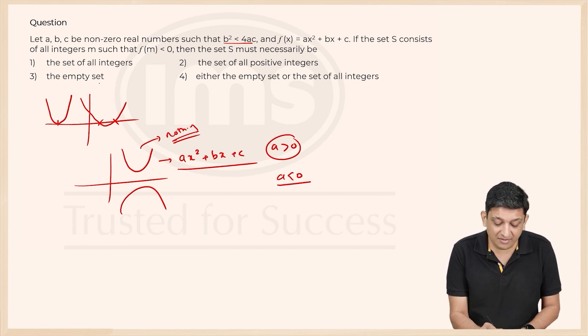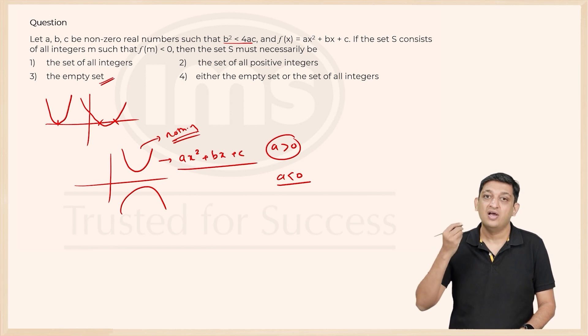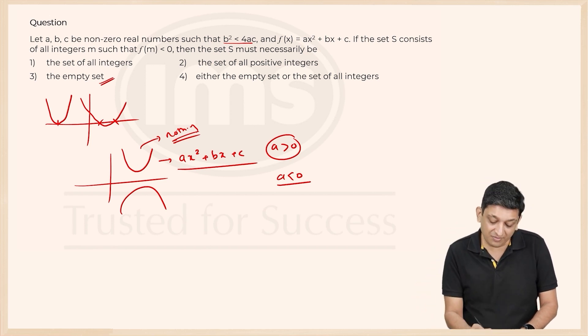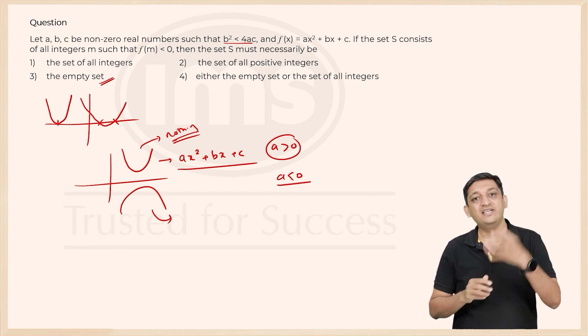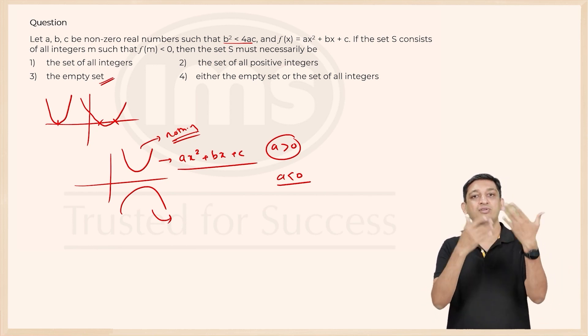So if you look at the options, there will be an empty set that could exist. At the same point in time, if I am looking at this particular case, then it will be true for all integers because it will never go above the x-axis.